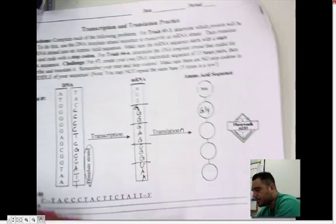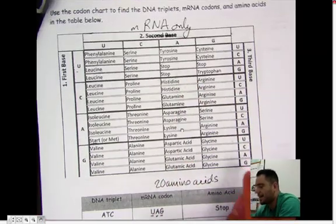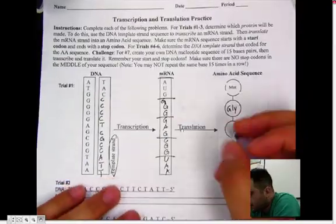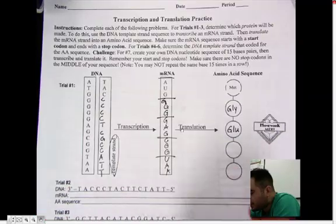GAG, turn it over. GAG, and we get glutamic acid. So I'll put GLU. And you keep going and so forth.